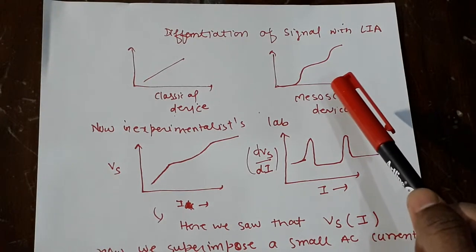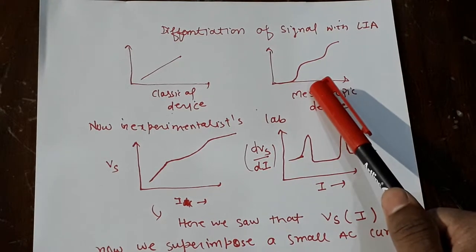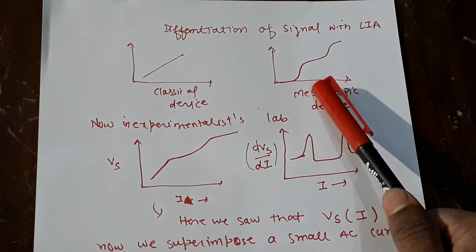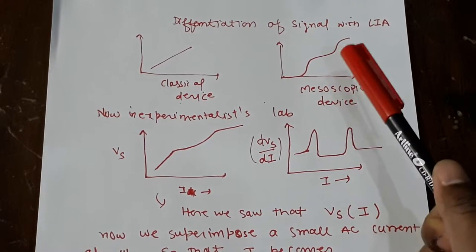So if it is very, very small, these steps, it is very hard to detect. So what you need, you need to find out the slope at each and every point, which will give you a better idea.